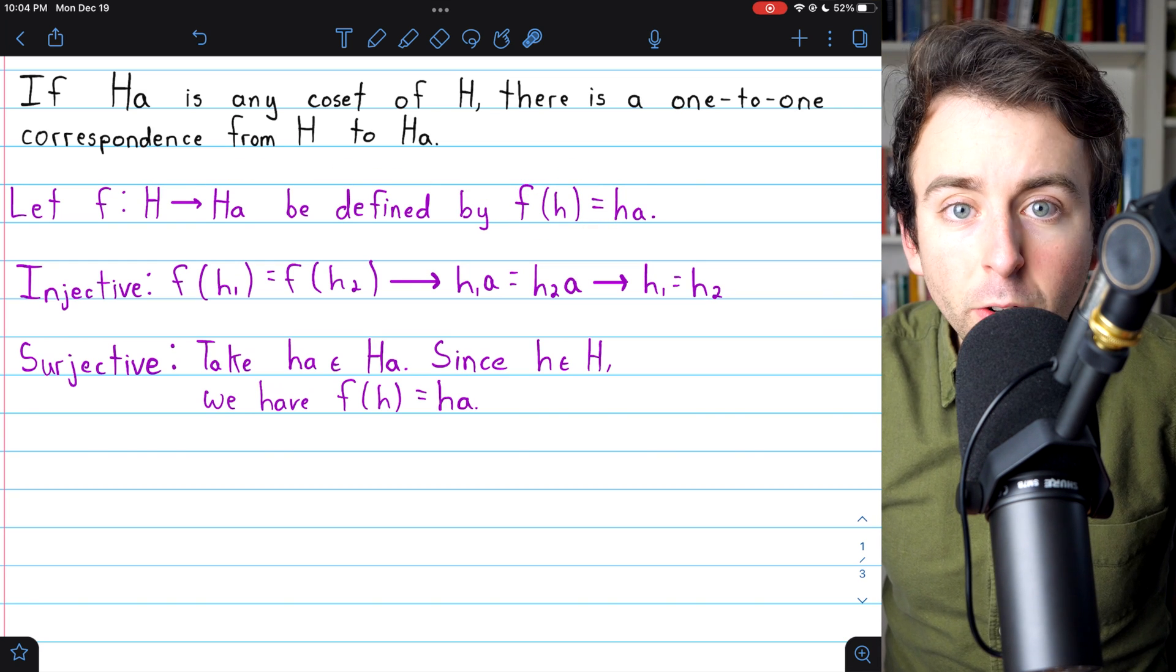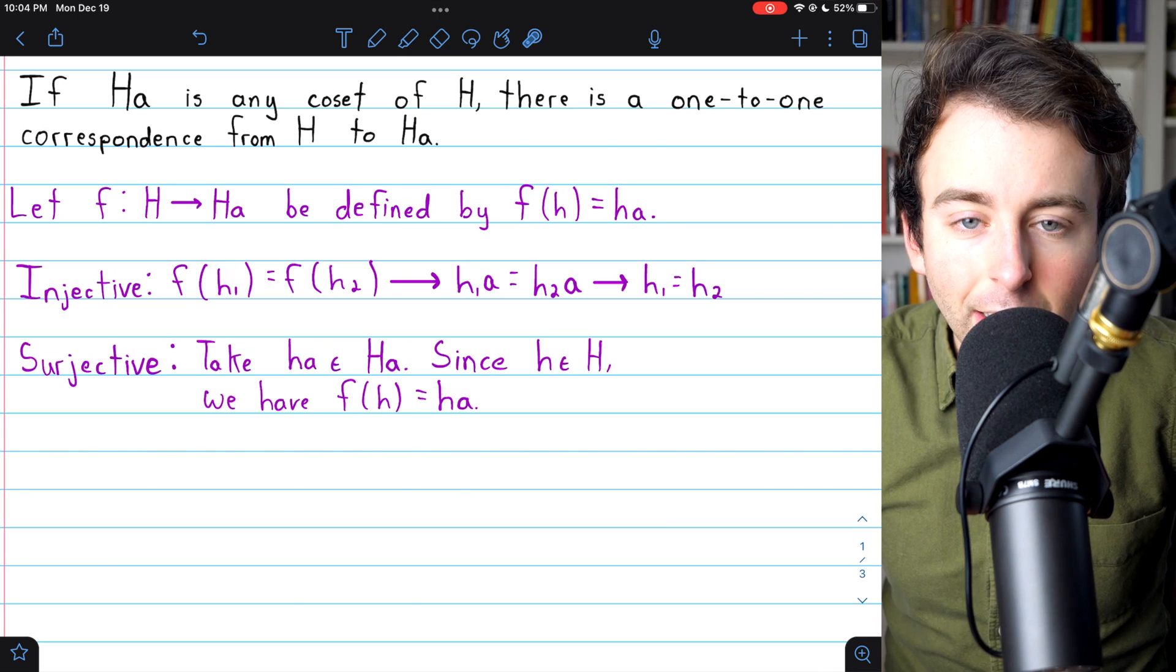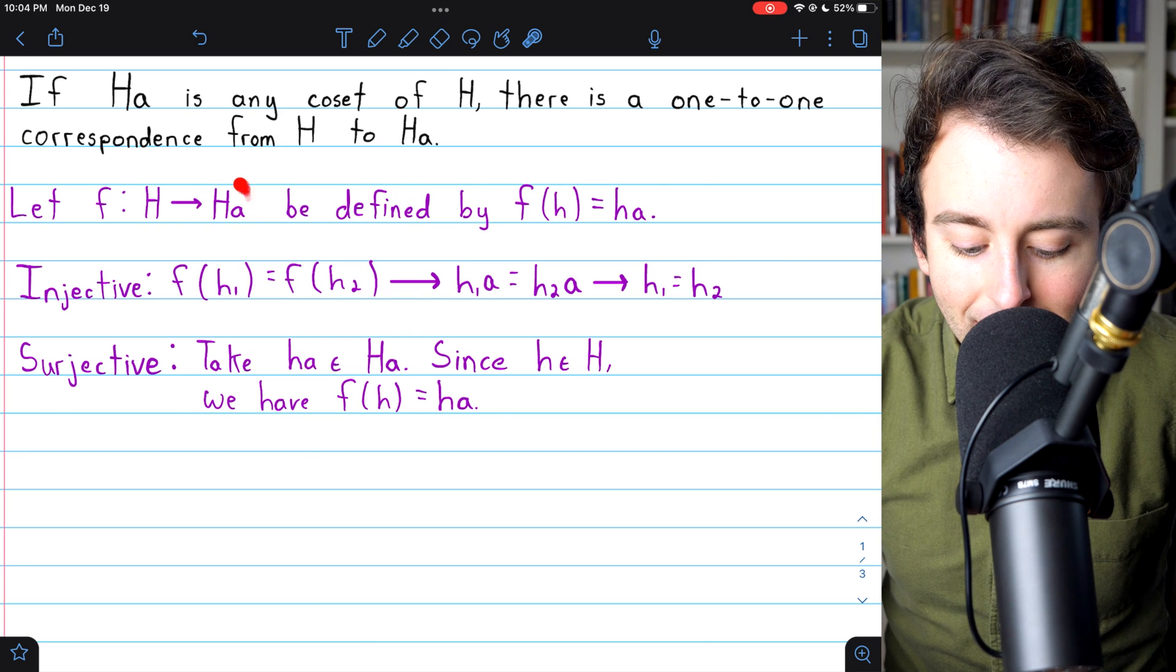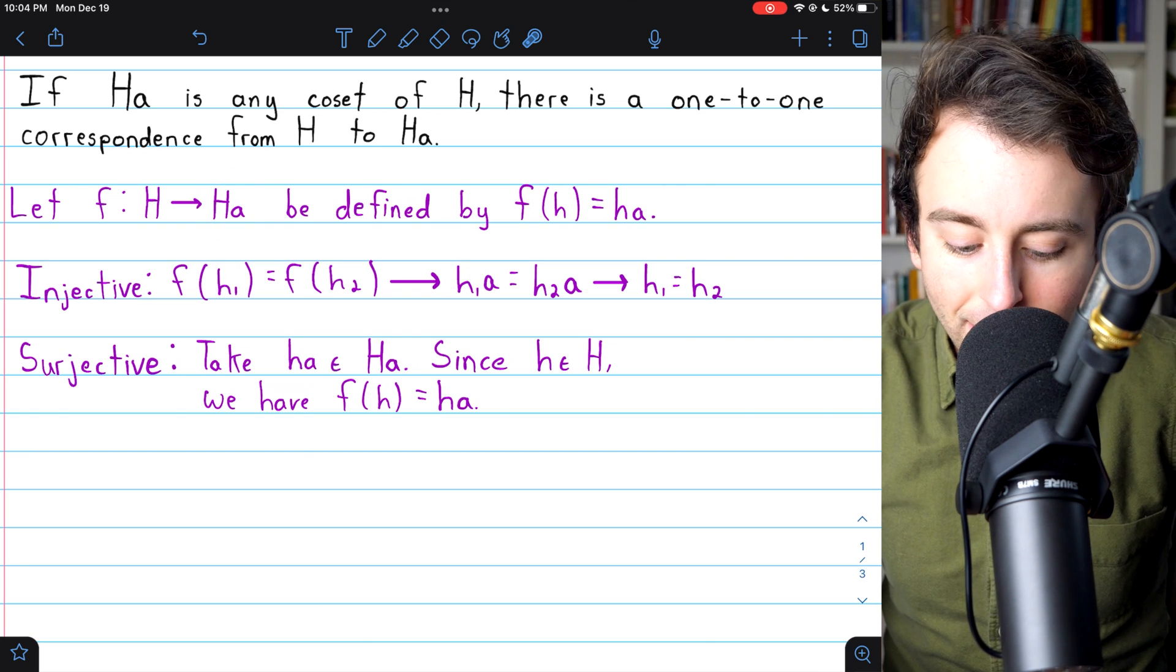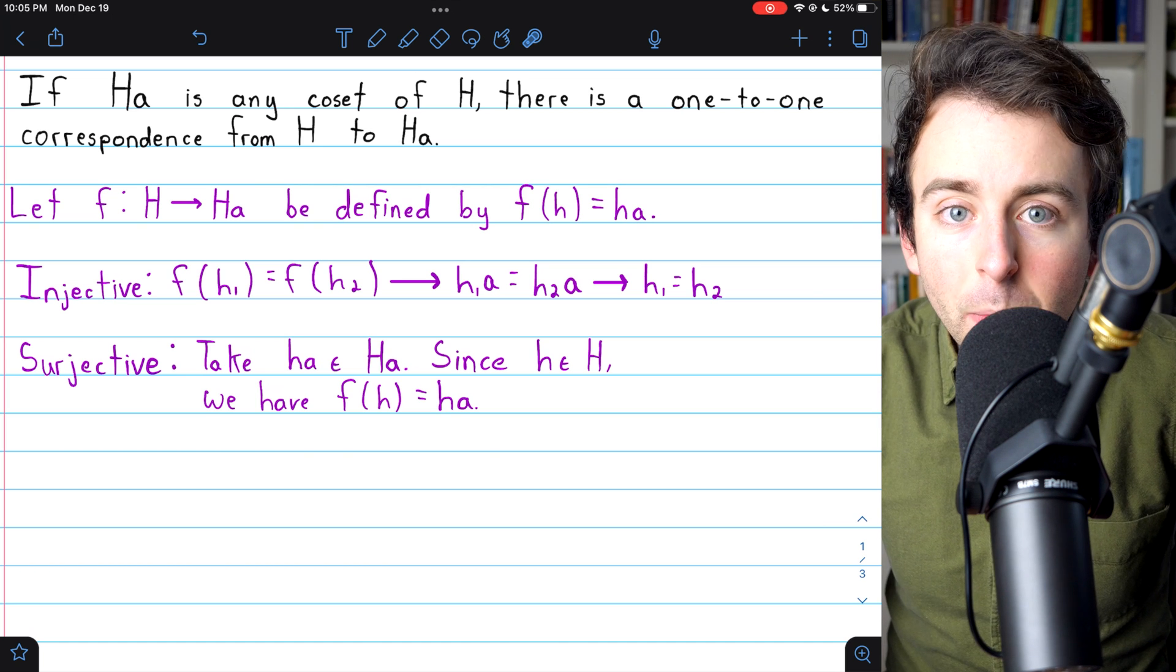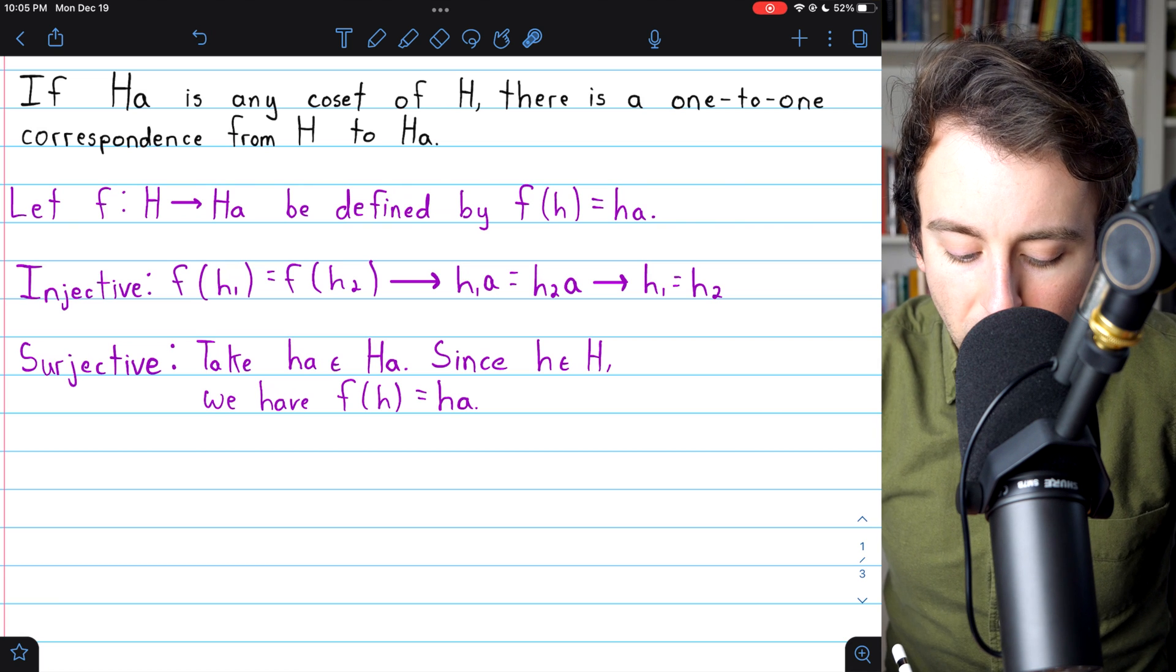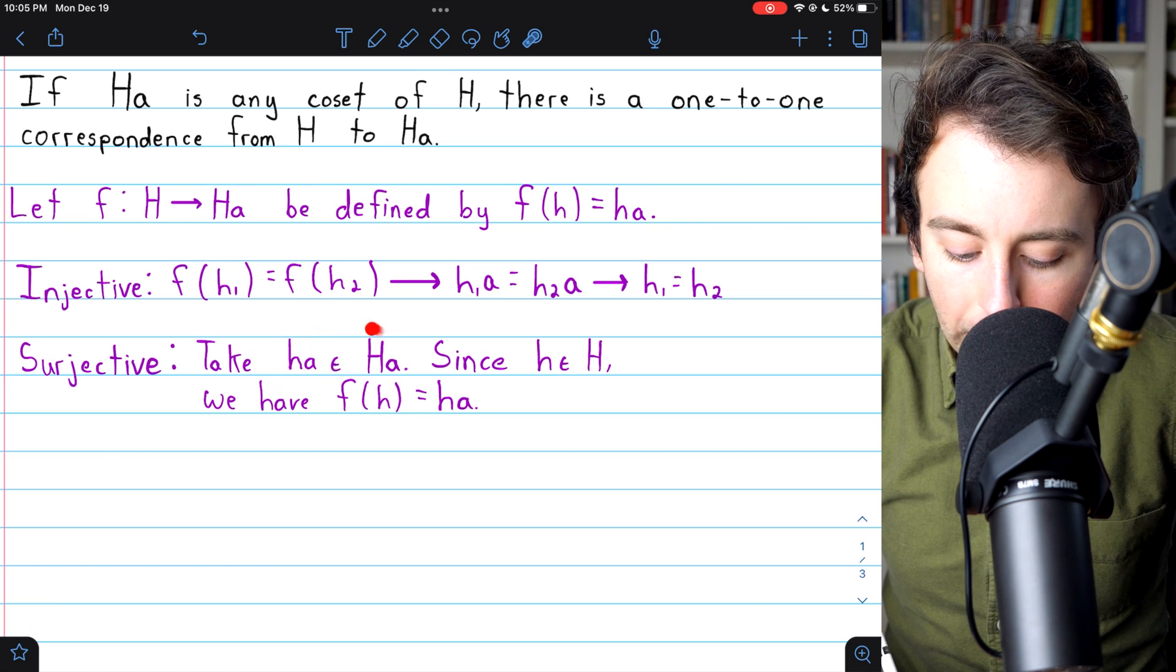To prove that it's surjective, it's even easier. Remember that what makes a function surjective is that every element in the codomain, so in this case, every element of the coset HA, is the image of some element in the domain.